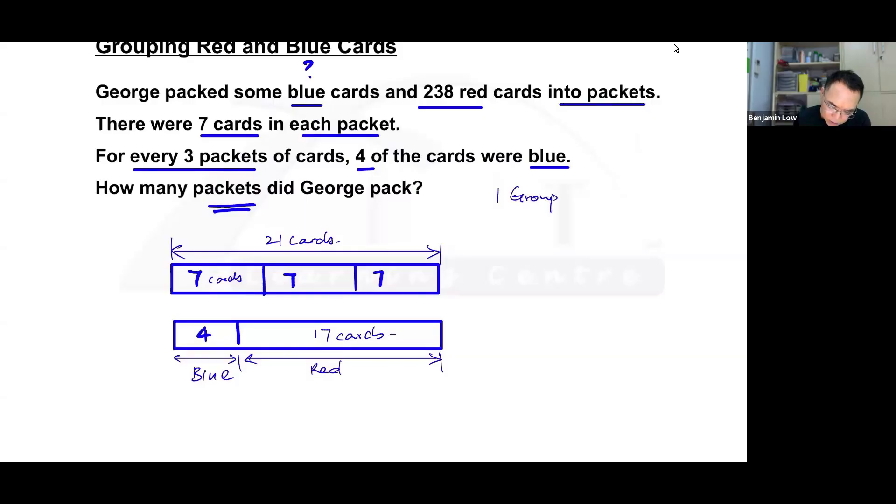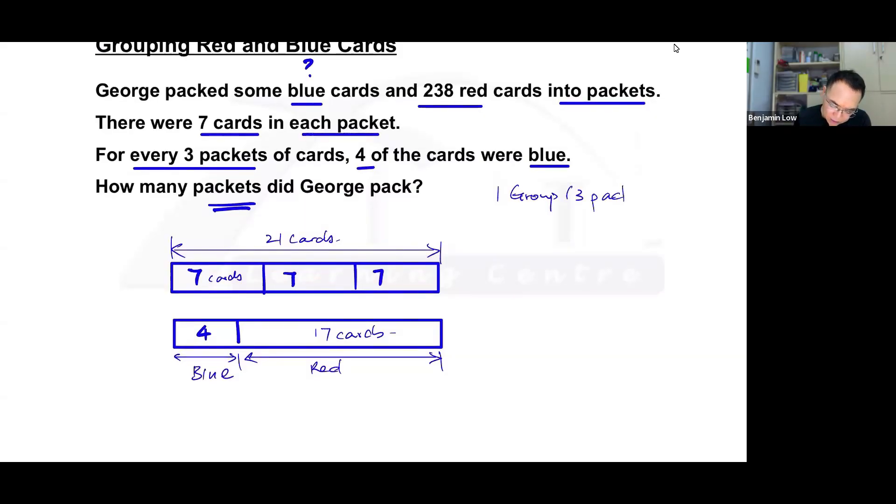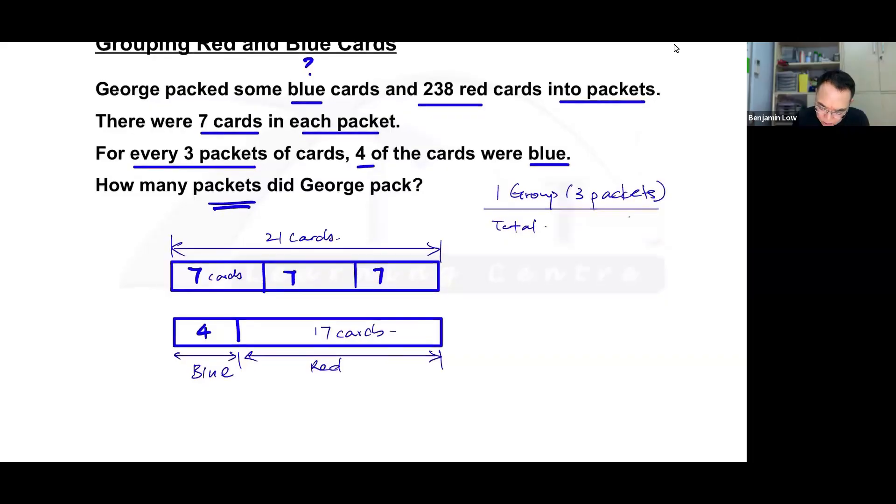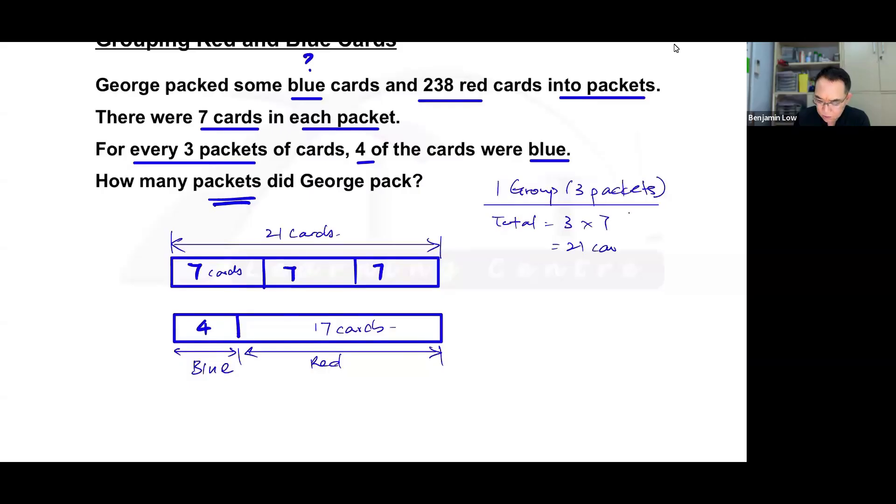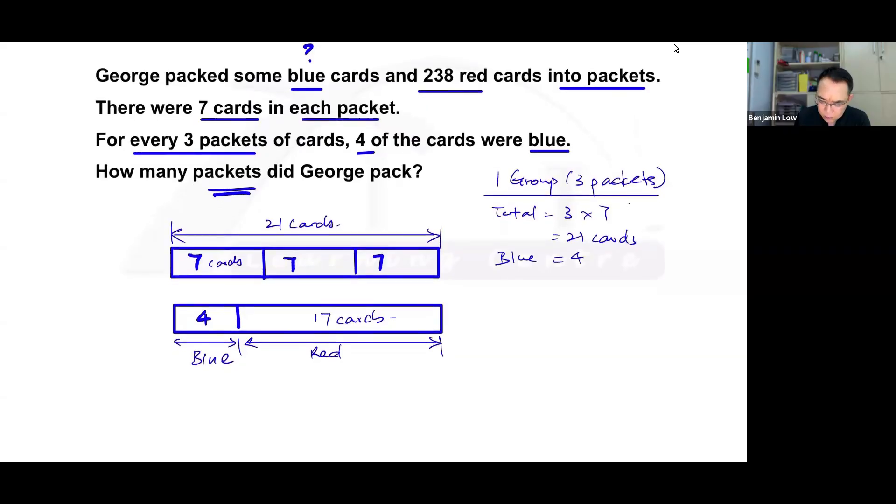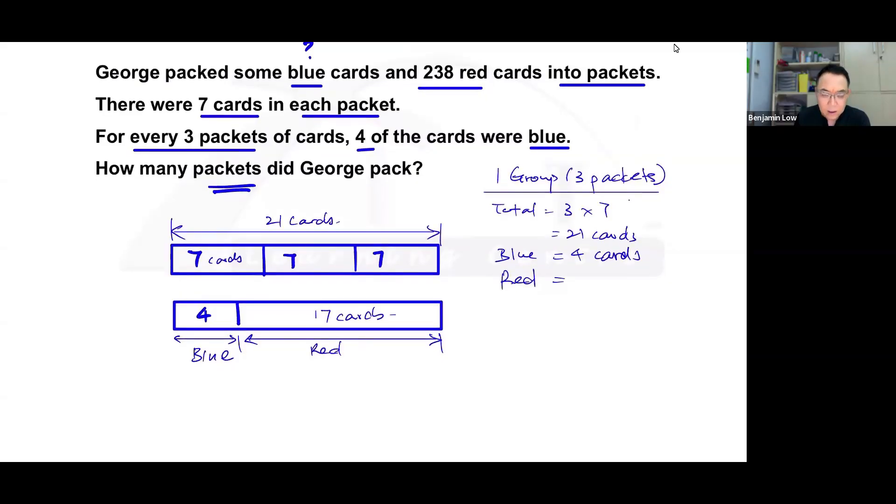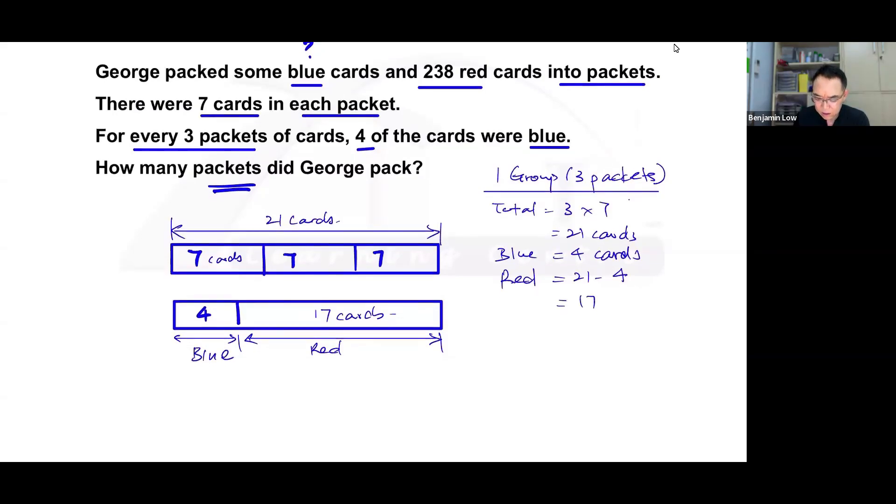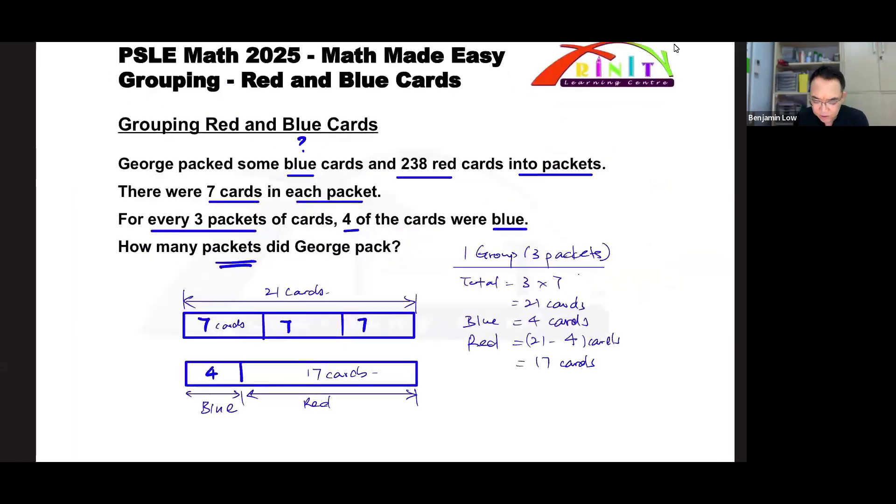Let's write all these things down. 17 cards are red. First, we have one group, and one group is made up of 3 packets. This one group of 3 packets contains 21 cards, which should be 3 times 7 equals 21 cards. Since I know that of the 21, 4 are blue, then I also know that for the red I should get 21 minus 4 to get 17 red cards.